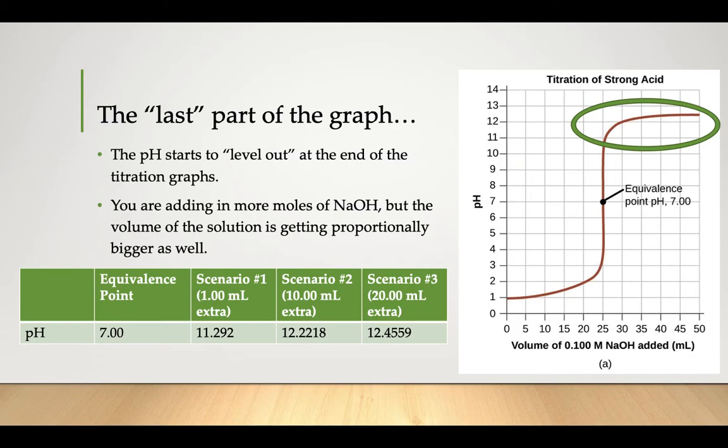Yes, you're adding more sodium hydroxide so your moles number is getting bigger, but the total volume of your solution is also getting proportionally bigger. So when you're taking the molarity of the hydroxide, it's not really changing too much there at the end, and that's why your pH levels out at the end of that graph.